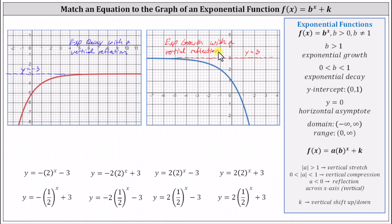This information should be enough for us to find the correct equations. For the graph on the left: exponential decay means b is between zero and one; a vertical reflection means a is negative; and the horizontal asymptote y equals negative three means k equals negative three. For the graph on the right: exponential growth means b is greater than one; a vertical reflection means a is negative; and the horizontal asymptote y equals three means k equals positive three.